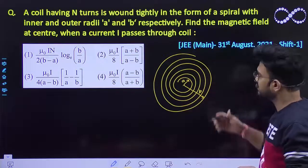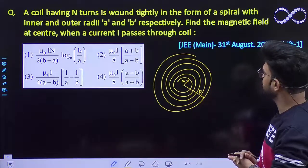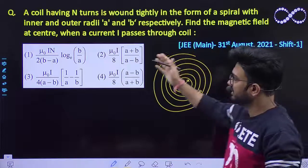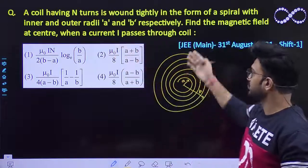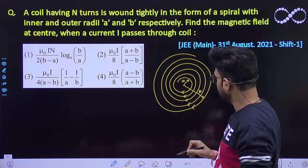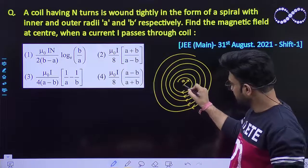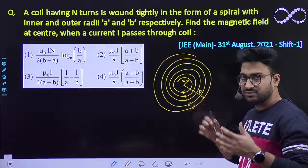This coil is having a certain current in it. Find the magnetic field at the center when the current I passes through the coil. Suppose I is the current which is passing through it just like this. So because of this current flowing in it, the magnetic field at the center, that you need to find out.